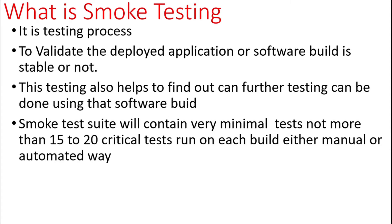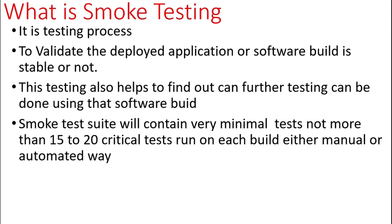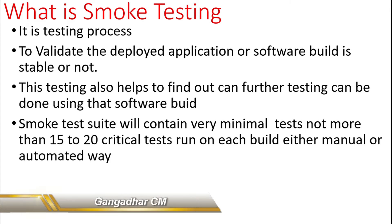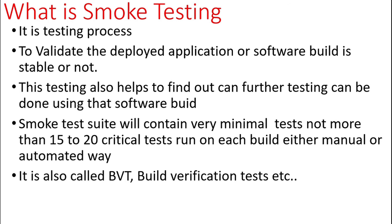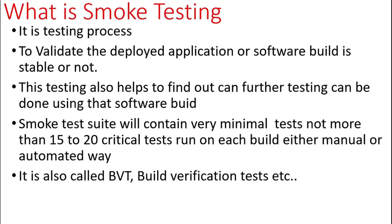If any of these 15 to 20 test cases are failing, we return the build back to the development team, stating that some critical functionalities are not working and it is not a good candidate for further testing. This prevents the testing team from wasting time on a wrong build — if the critical functionality itself is not working, there is no point in executing any other functionalities.